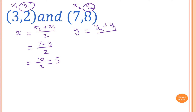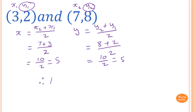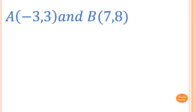The average of y2 and y1 is (8 + 2) / 2 = 10 / 2 = 5. So the midpoint of these two points is (5, 5).